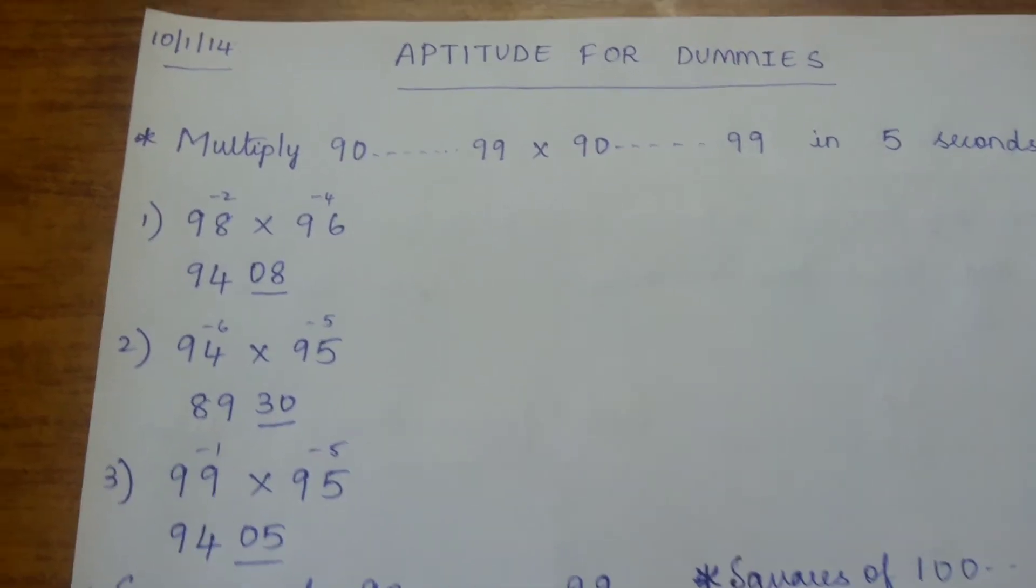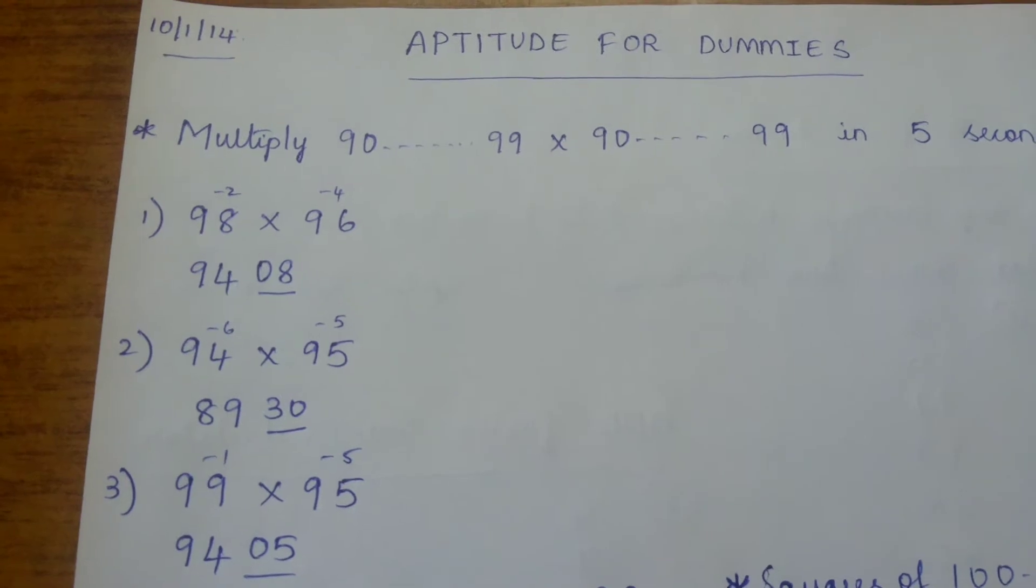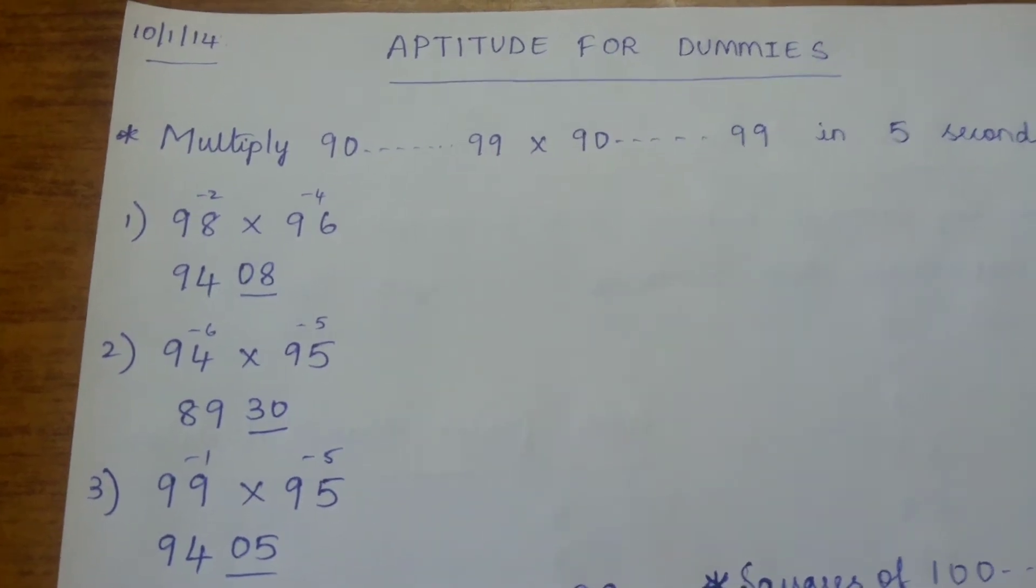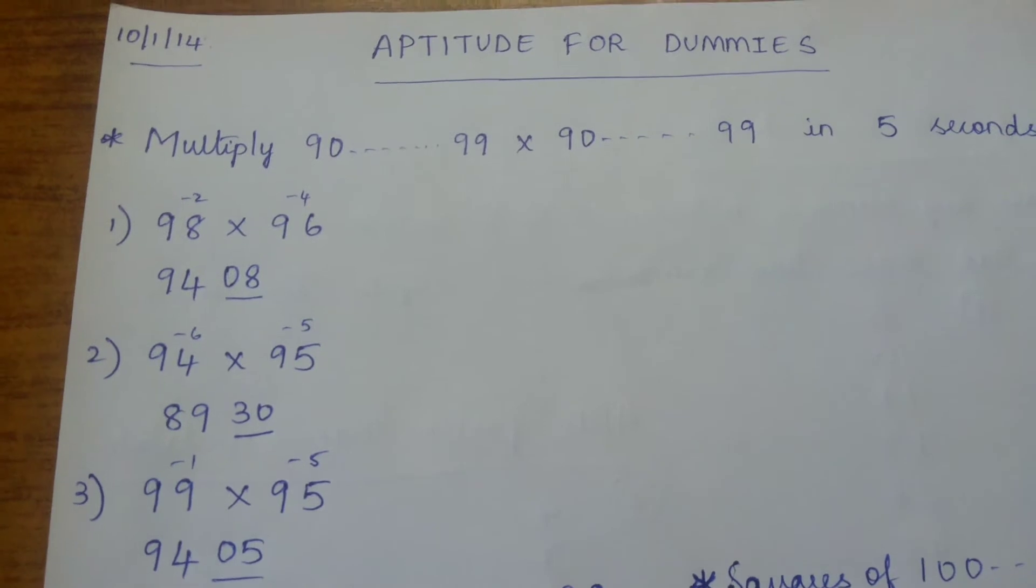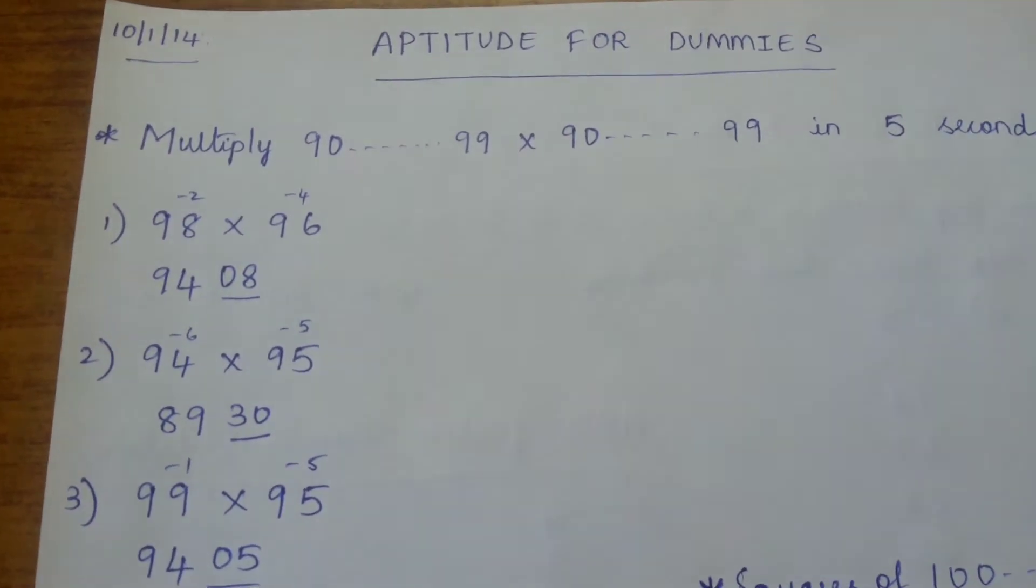98 is 2 less than 100, so I've written minus 2 on top of it. 96 is 4 less than 100, so I've written minus 4. Now 2 times 4 is 8, so the last two digits will be 08. Since a single digit number is coming, we write 08.